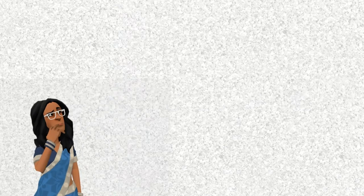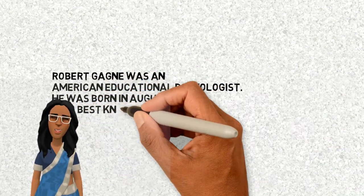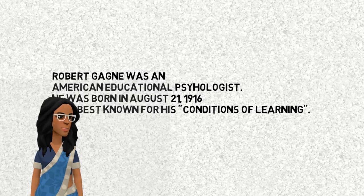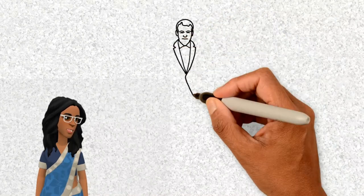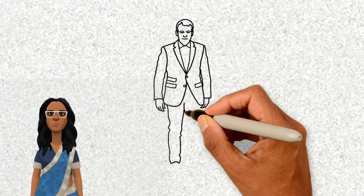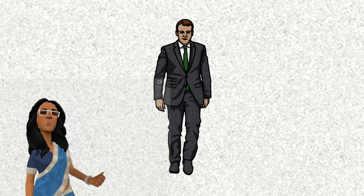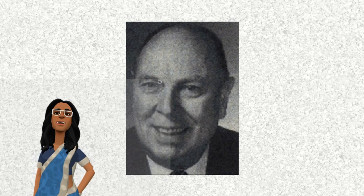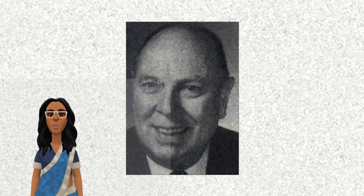Who is Robert Gagné? Robert Gagné was an American educational psychologist, born on August 21, 1916. He is best known for his conditions of learning. Gagné pioneered the science of instruction during World War II when he worked with the Army Air Corps training pilots. In 1958, Gagné became a professor of psychology at Princeton University and conducted many studies, developing a series of works that simplified and explained what he and others believed to be good instruction.